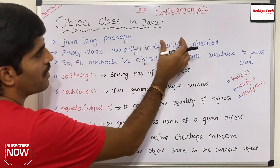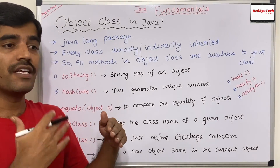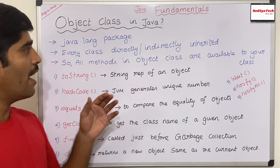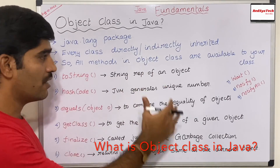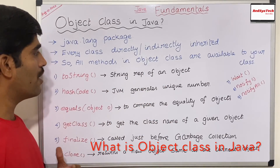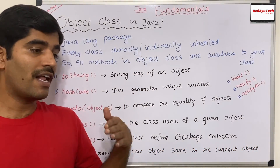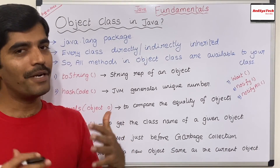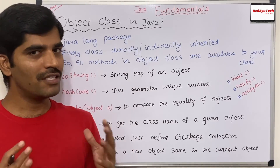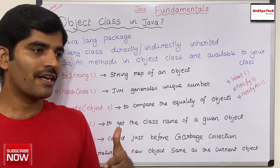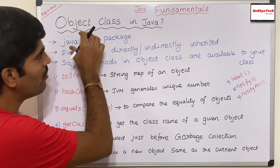People say every class directly or indirectly inherits from the Object class. What does that mean? If I'm writing a class and I'm not extending any other class, then I am directly inheriting all the methods from the Object class — we don't need to write these methods ourselves. For indirect inheritance: if I have a class A that extends class B, which is a parent-child relationship, then class A is indirectly inheriting the Object class.